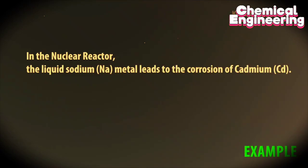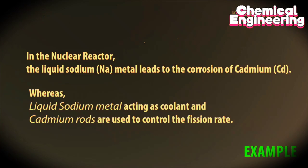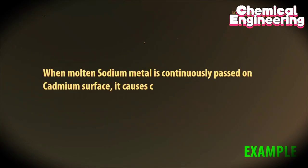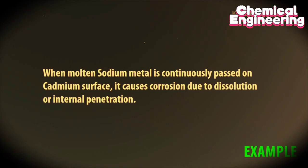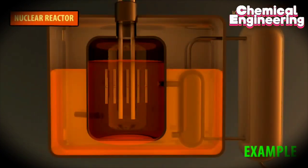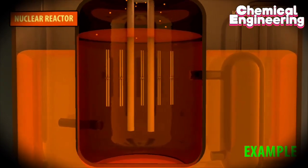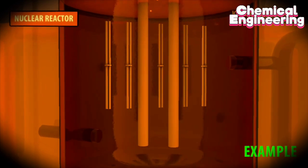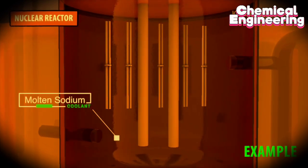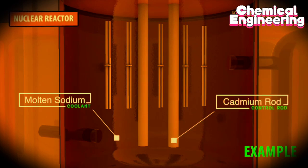For example, in the nuclear reactor, the liquid sodium metal leads to the corrosion of cadmium, whereas liquid sodium metal acts as coolant and cadmium rods are used to control the fission rate. When molten sodium metal is continuously passed on cadmium surface, it causes corrosion due to dissolution or internal penetration.